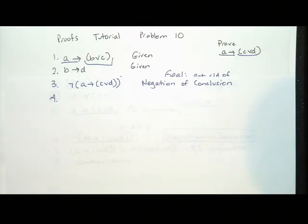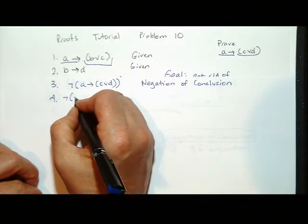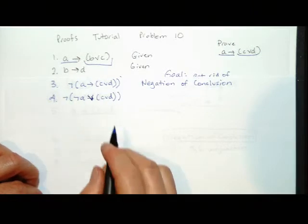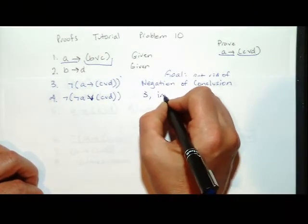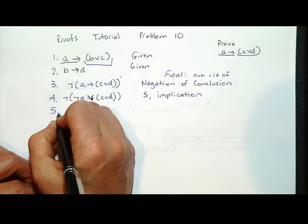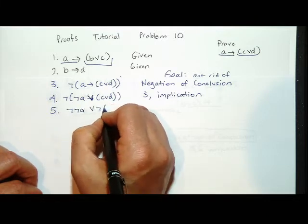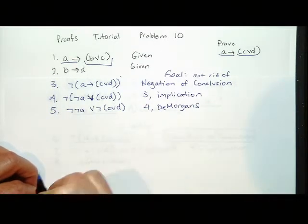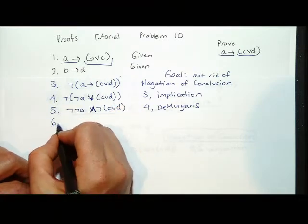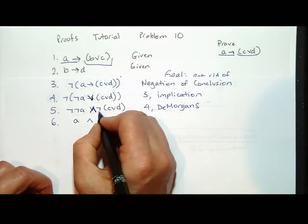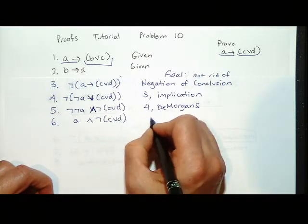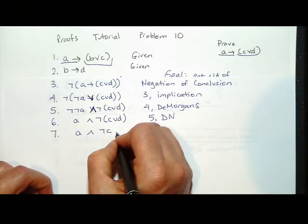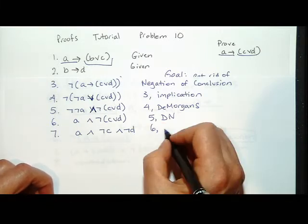The first thing everybody did was turn this implication into an OR, because we don't have DeMorgan's to spread a NOT across parentheses. That was from line three using the implication rule. Then on line five, we do DeMorgan's to get NOT NOT A or NOT the quantity C or D. That was line four and DeMorgan's — it's an AND, not an OR, because DeMorgan's flips operators. Then double negation gives A and NOT the quantity C or D. Distributing the second NOT gives A and NOT C and NOT D via DeMorgan's again.